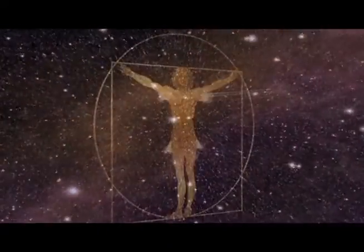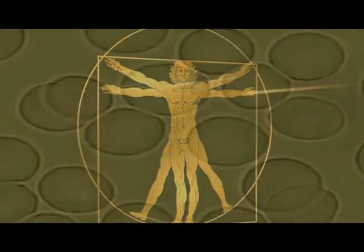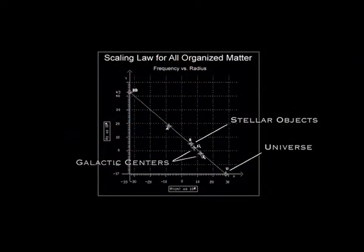The next step was to see if the pattern continued on the other end of the physics scale. Now we went from stars all the way down to atoms, right across the quantum world from relativistic equation to the quantum world, and we plotted the energy level of an atom and its radius.